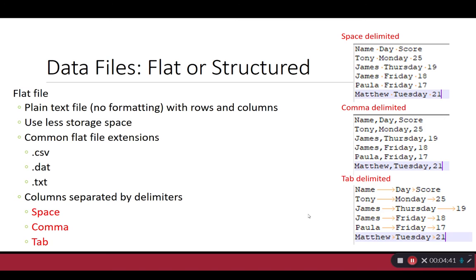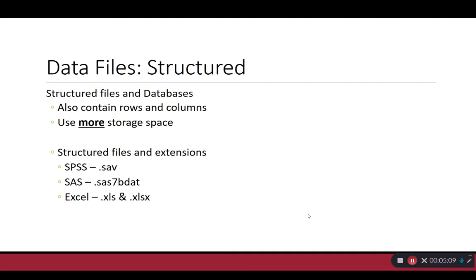On the right-hand side of your screen, we see different types of delimited files. At the top, we see a space delimited file, where each column is separated by a space. In the middle, we have comma delimited files, where each column is separated by a comma instead of a space. Next up, we have tab delimited, where each column is separated by a tab. Structured files are our other type — they contain more storage space and are also organized as rows and columns. Common extensions include .sav for SPSS files, .sas7bdat for SAS data sets, and .xlsx and .xls for Excel files.